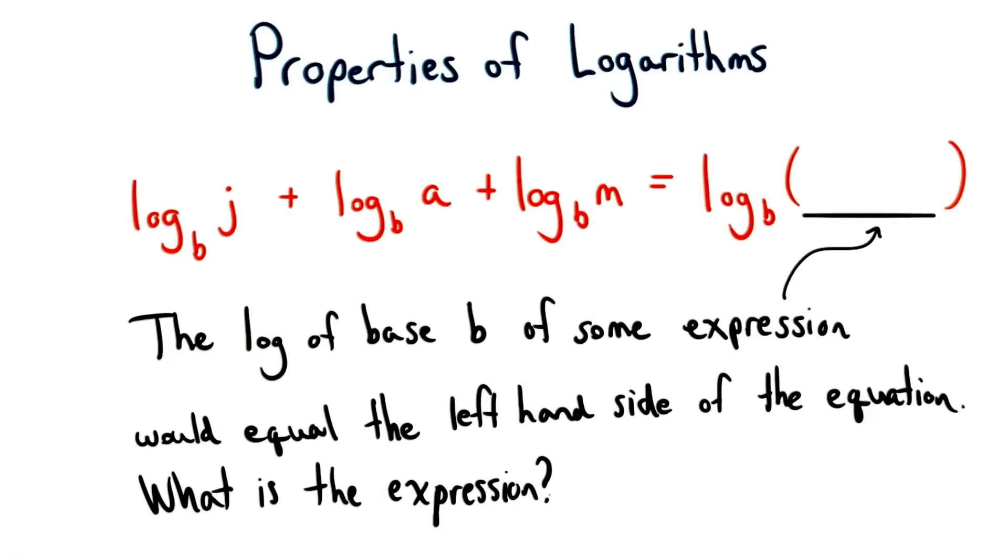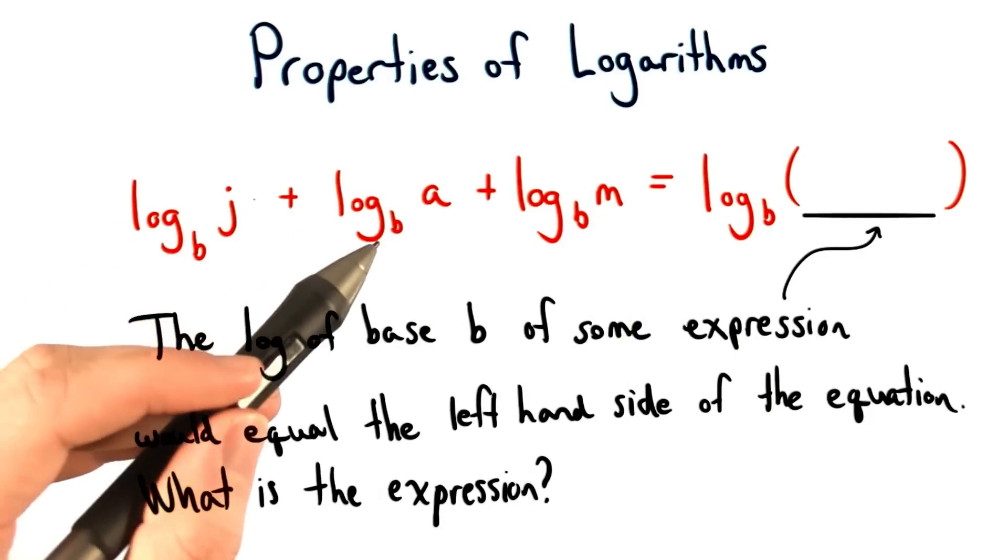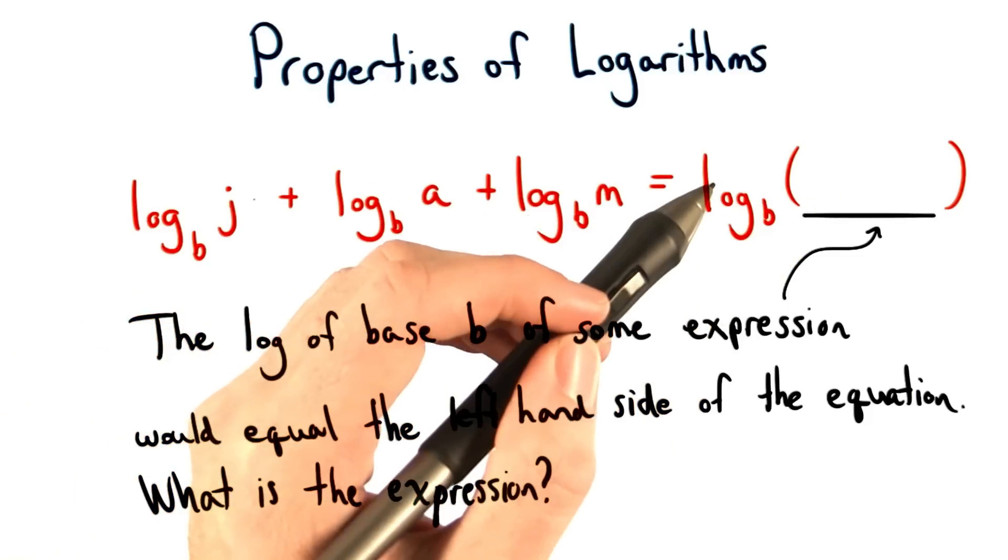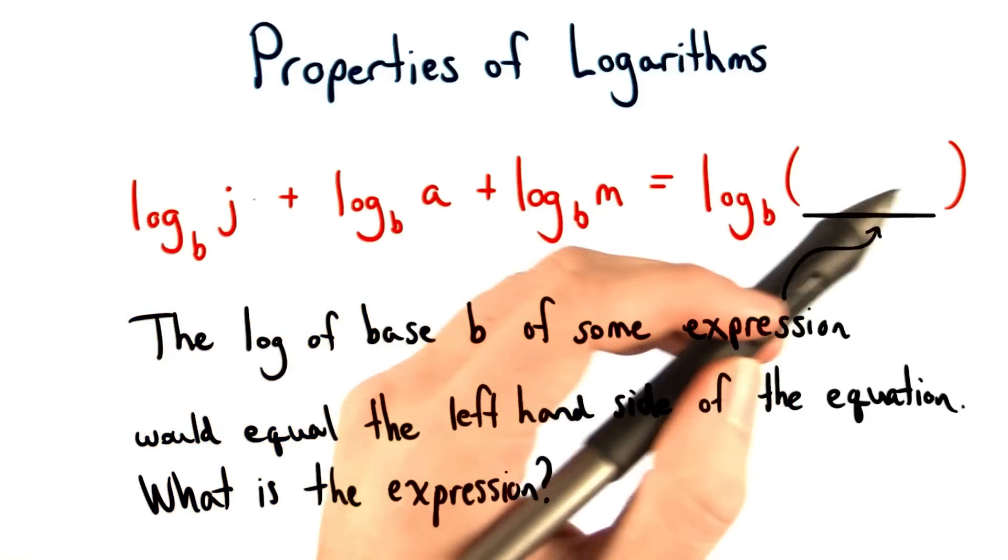So let's see if you can extend this reasoning. If we have log base b of j plus log base b of a plus log base b of m, what would that equal if we did the log base b of this expression?